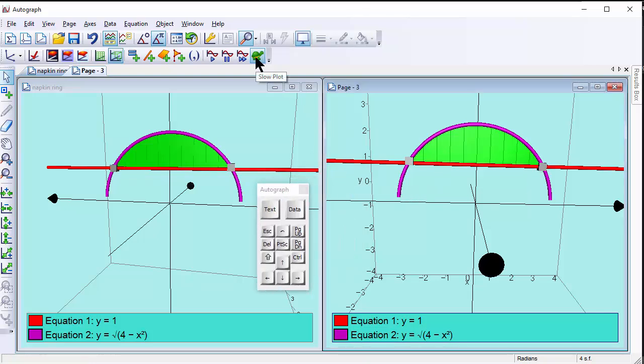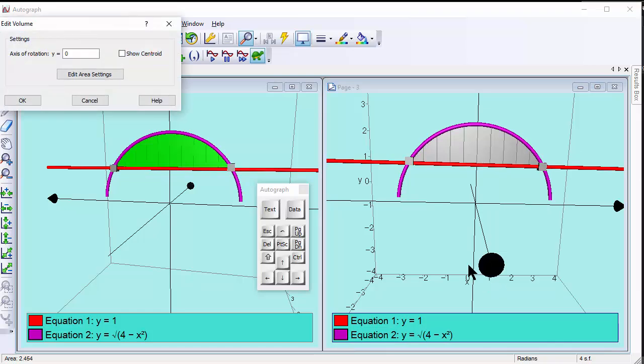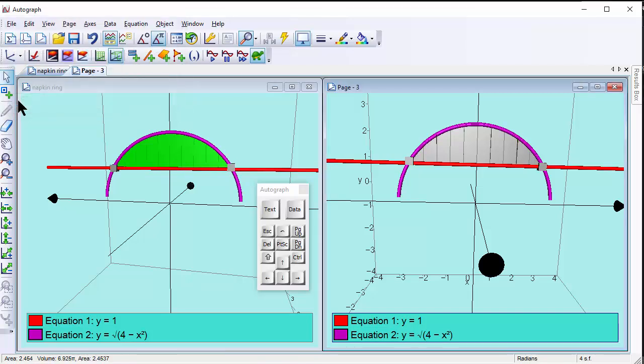All I have to do is first of all make sure I've got the slow plot on and select that, and right click, find the volume. So about y equals zero, which is this line here, and click OK. And around it goes.